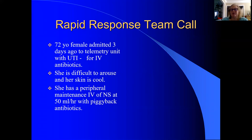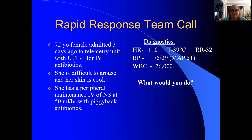Imagine this is a story. You're part of a rapid response team called to a unit where you've got a 72-year-old female. She was admitted to tele a couple of days ago with a UTI and admitted for IV antibiotics. Now they find her difficult to rouse. Her skin is cool. She has a peripheral IV — just a maintenance IV — running at 50 mils an hour of normal saline to keep the vein open so they can piggyback those antibiotics. Her heart rate is 110 — above normal, so we've got a tachycardia.